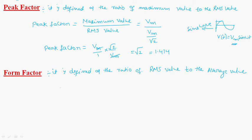Form factor is equal to Vrms by Vaverage. What is the Vrms value? Vrms is equal to Vm by root 2, which is 0.707 Vm.